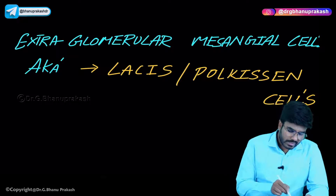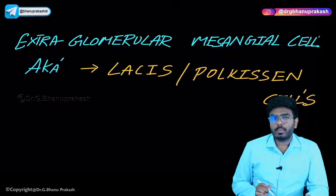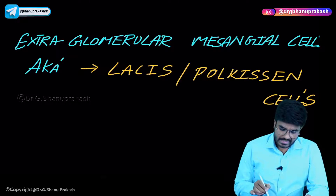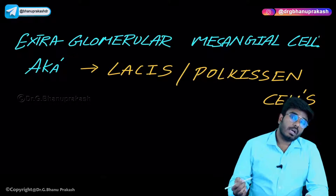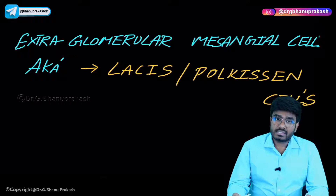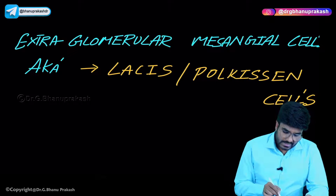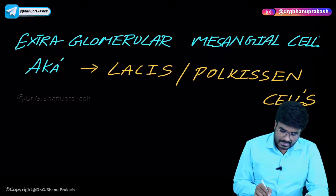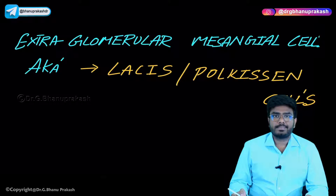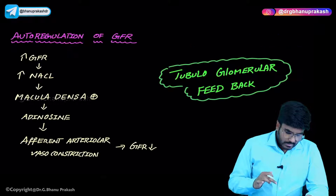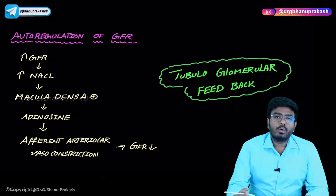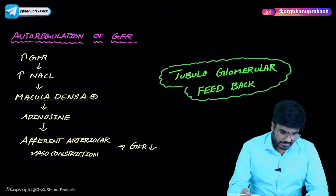One more important point: these extra glomerular mesangial cells are also known as Lacis cells or Polkissen cells. Now let's see how autoregulation of GFR happens.